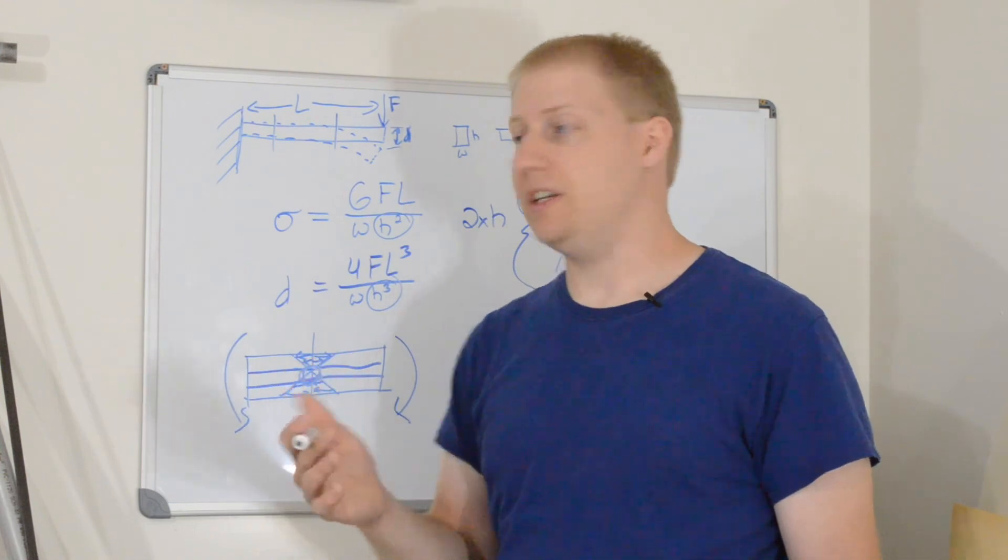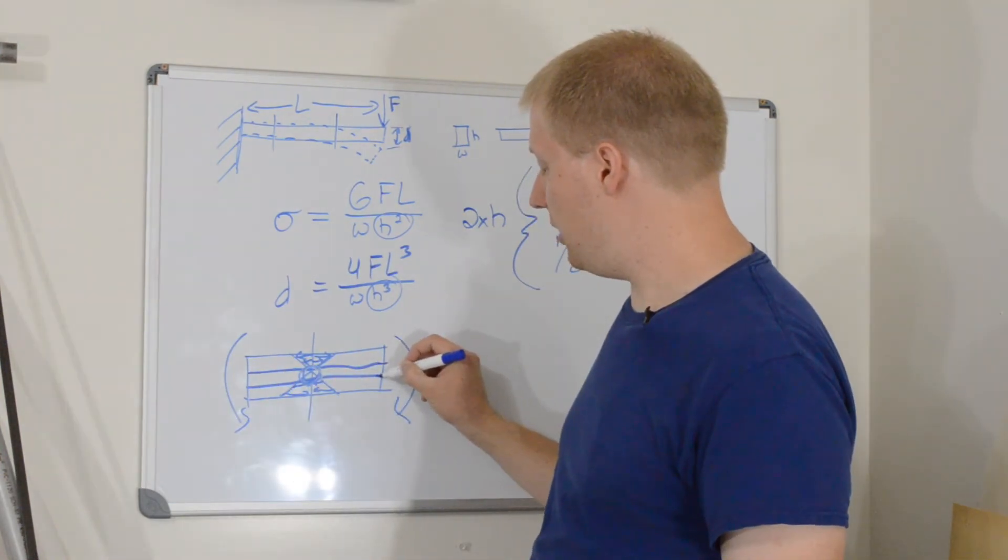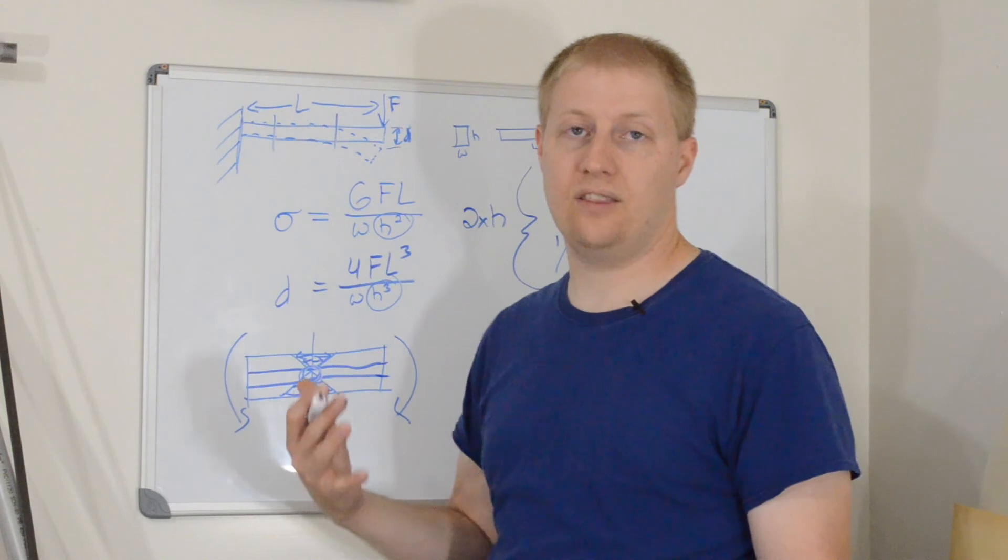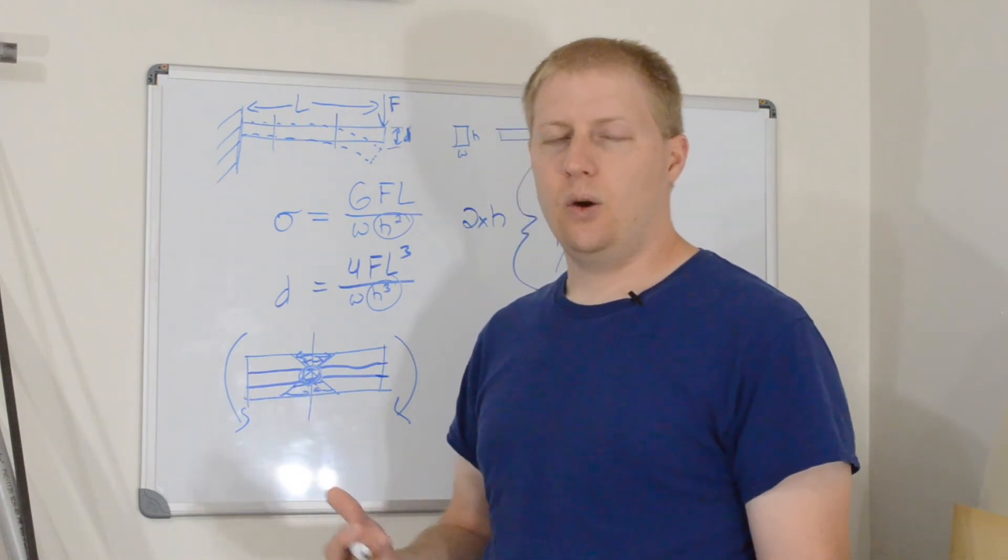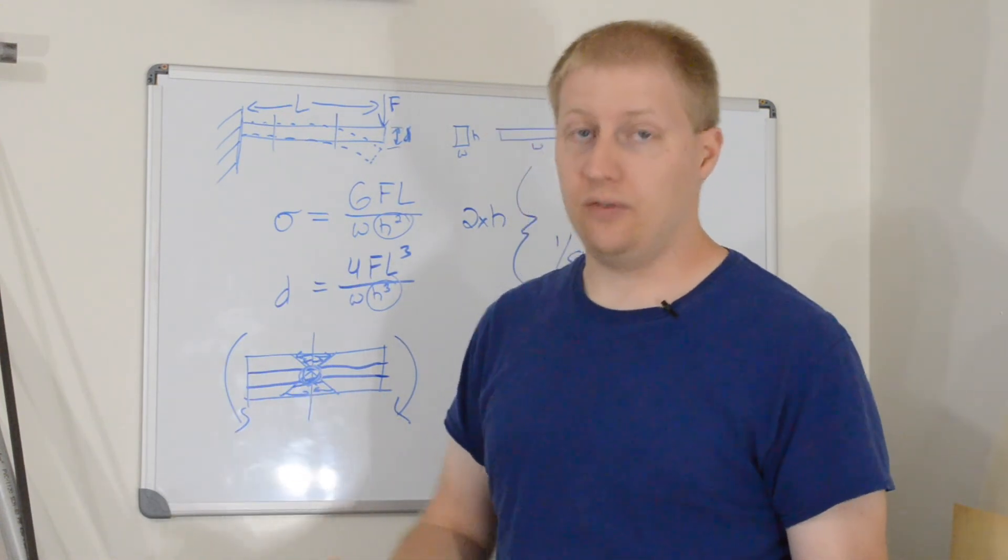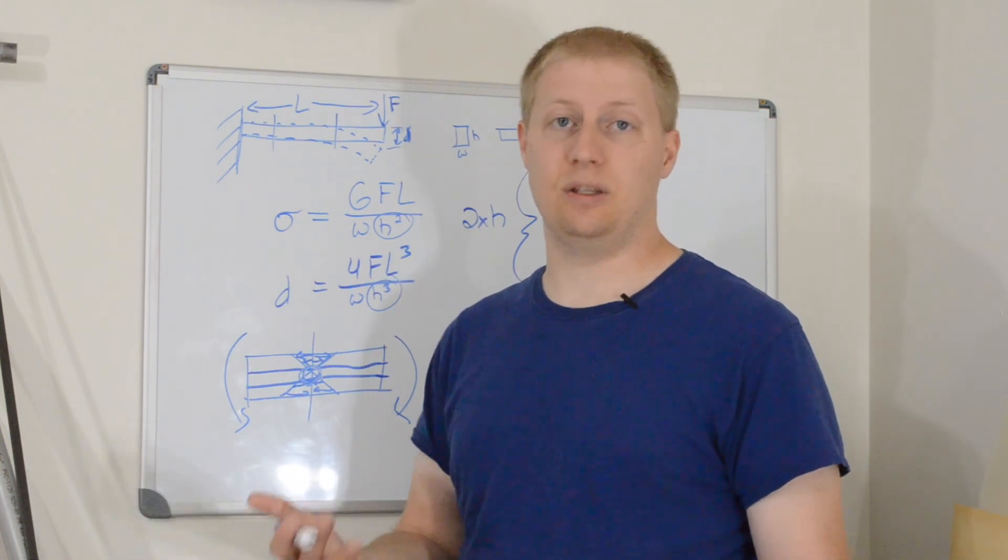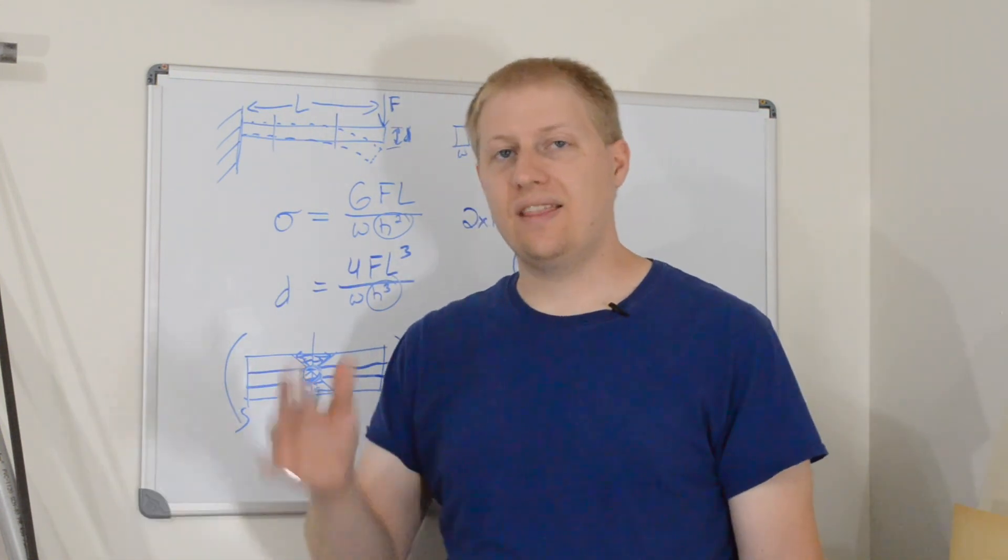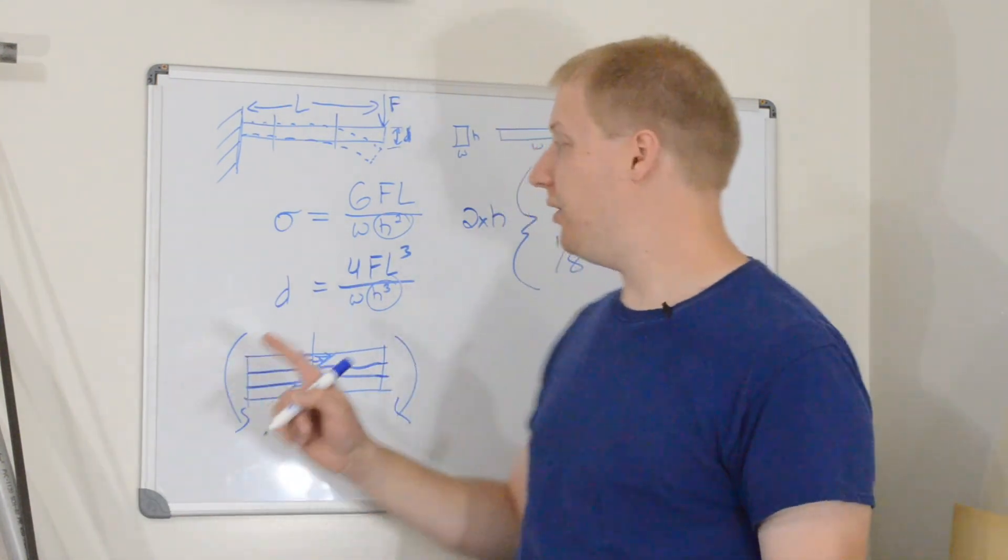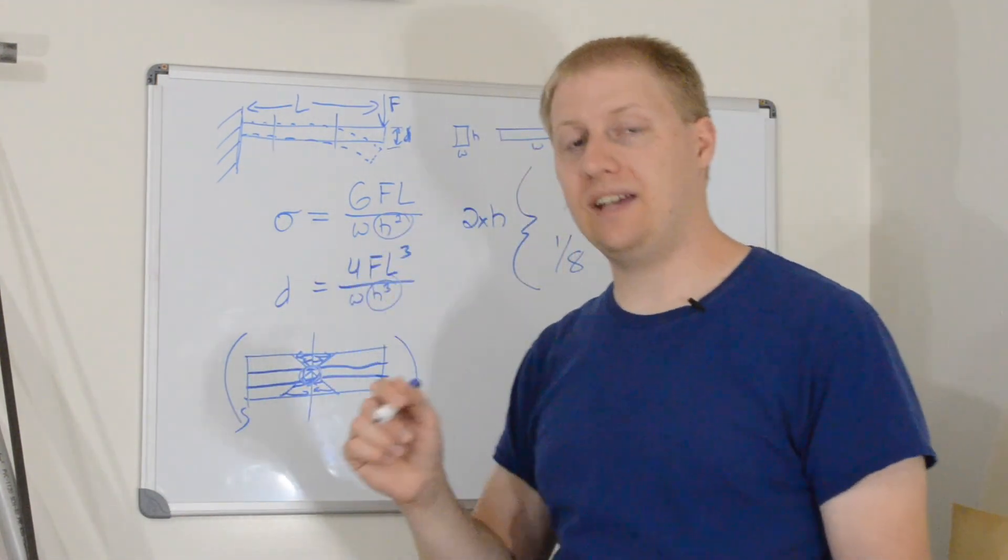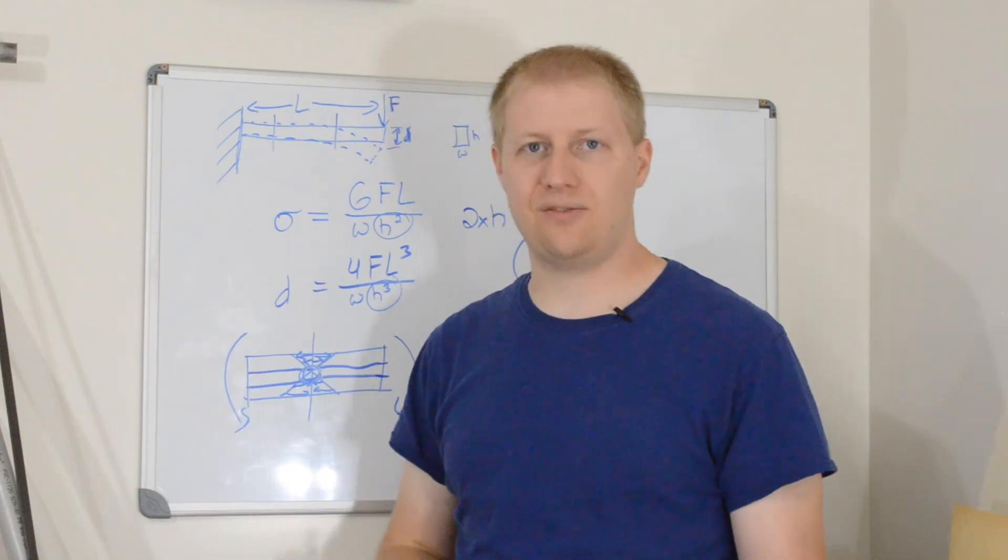You can have the face sheets. These can peel right along this bond line between the core and the face sheets. Why add an additional failure mode if you don't have to? If you don't need it for the flexibility anyway? So there you have it. That's flexibility and strength in a nutshell, and that is how you design a laminate that is both flexible and strong. Thanks for being here.